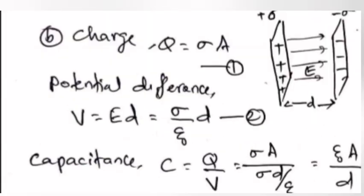Question 26B: Derive the expression for capacitance of a parallel plate capacitor. Answer: Charge Q equals σA. First equation. Potential difference V equals E dot d equals σ by ε₀ times d. Second equation. Capacitance C equals Q by V equals σA by σd by ε₀ equals ε₀A by d.